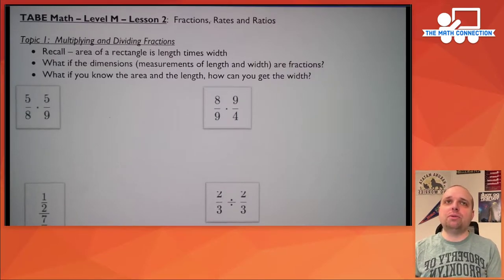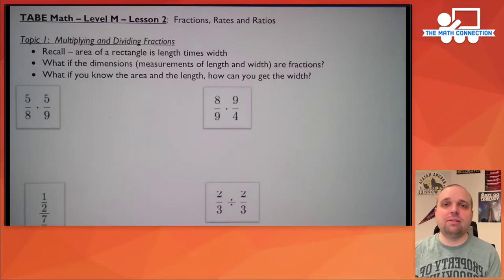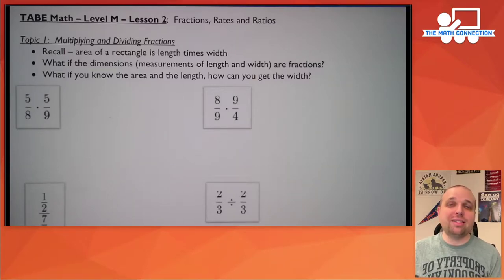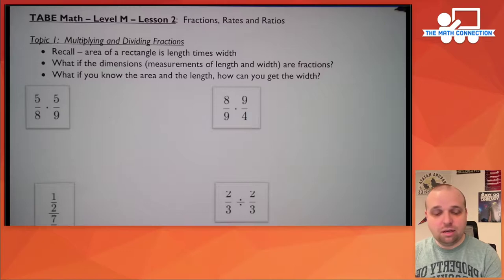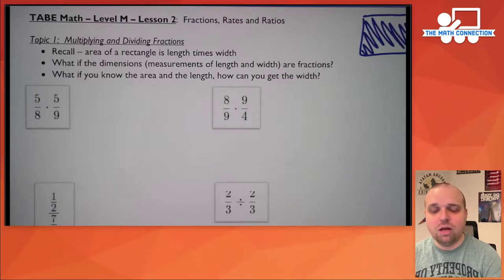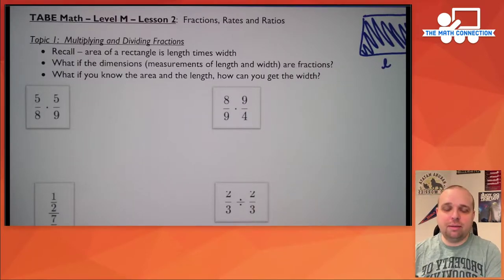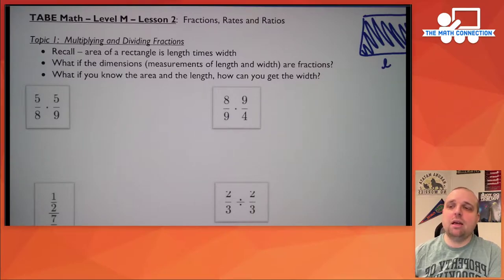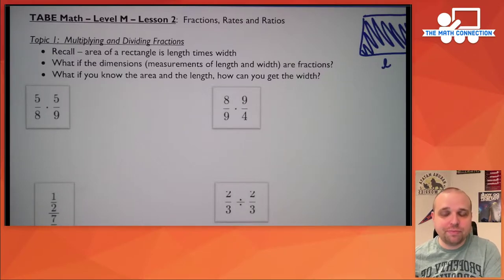One way to connect this to previous work is geometry. The area of a rectangle is found by multiplying the length times the width. Here's a rectangle - we find the whole area by multiplying length times width. That's easy with whole numbers: if the length is 2 and the width is 1, the area is simply 2.